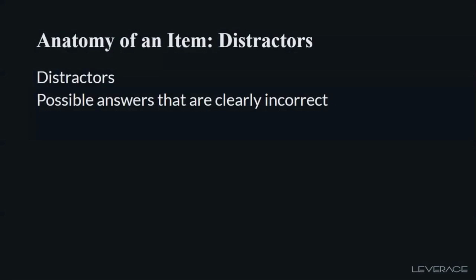The next part is distractors. Distractors are the other possible answers or alternatives supplied in your test items that are clearly incorrect. One important point in item development is that your distractors should not only be wrong, but they should possess the capacity to make someone who has not mastered that content believe they are correct.